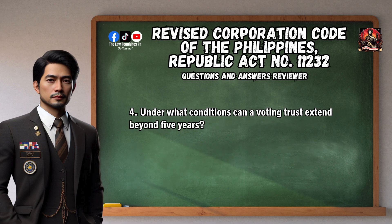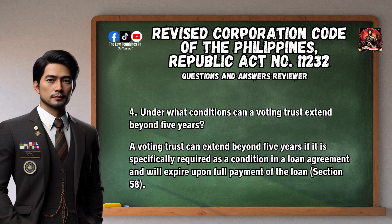Question 4: Under what conditions can a voting trust extend beyond five years? A voting trust can extend beyond five years if it is specifically required as a condition in a loan agreement and will expire upon full payment of the loan. Section 58.